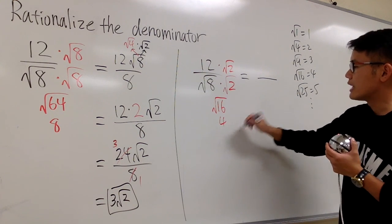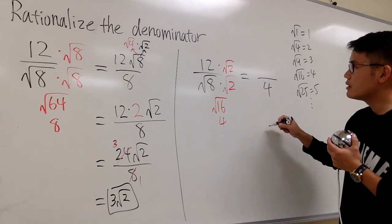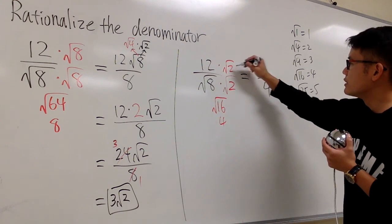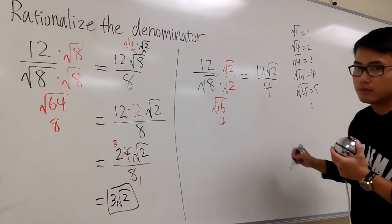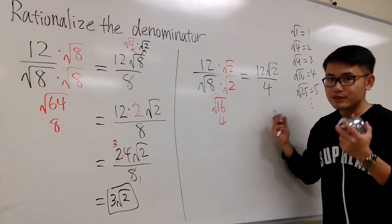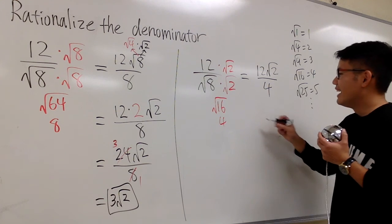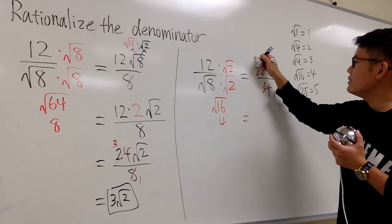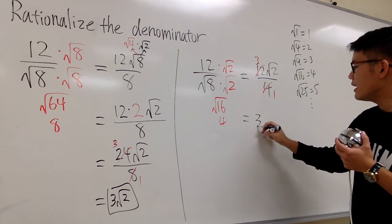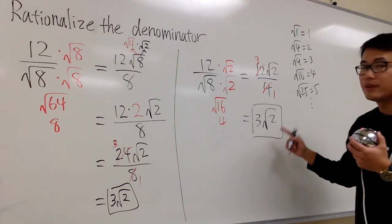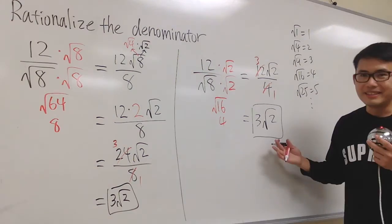So, this time, we will just have a 4 in the denominator. On the top, we have just the 12 square root of 2. And you see, this is the simplest square root numbers already. At the end, 12 over 4. This is 1, this is 3, right? We can still simplify it, and we still end up with 3 times square root of 2. So, this is it.